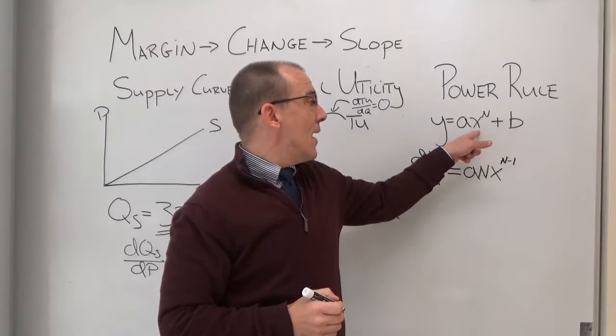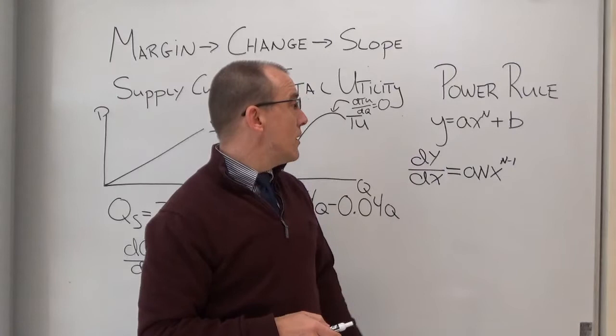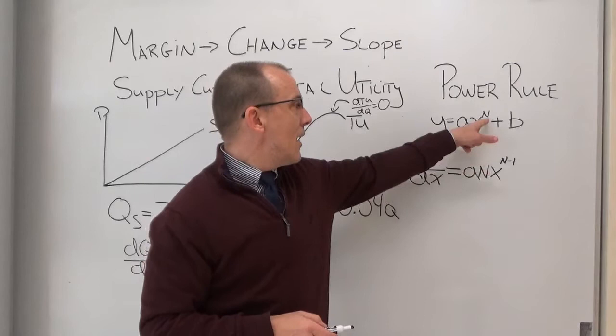The b here, because it has no x variable attached to it, we just ignore it. It drops away. So the power rule is a relatively simple mathematical change where all we do is we take our exponent, bring it down, multiply it times the constant a, and subtract 1 from the exponent. Pretty simple.